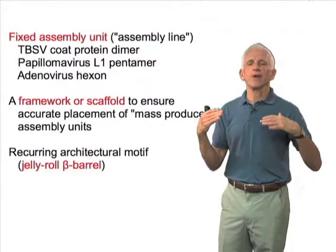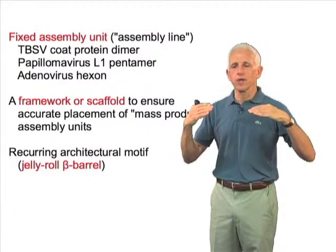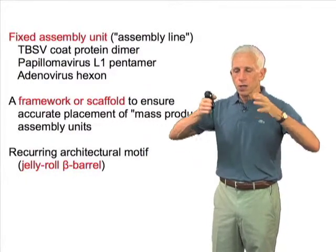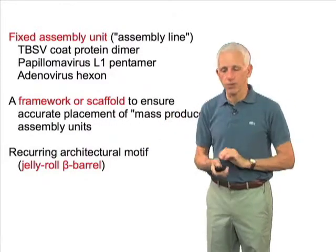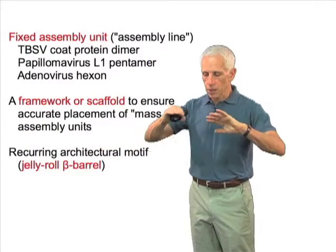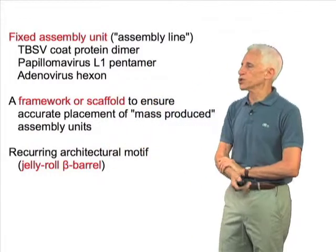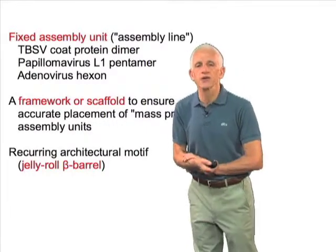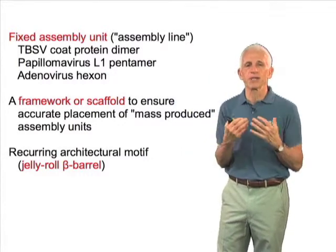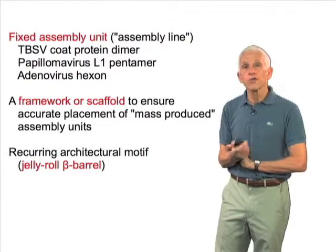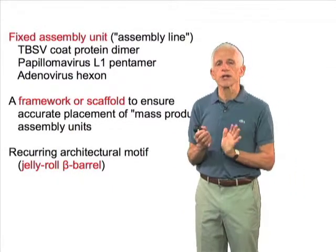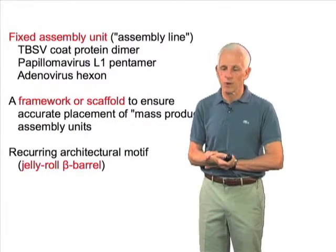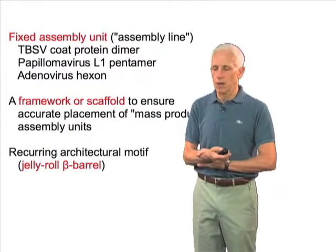But in order to determine how that mass-produced assembly unit fits into a defined structure of larger size — how the positioning of that subunit doesn't simply lead to errors in building a larger or smaller particle — there's a framework or scaffold, just as in the construction of a building, that ensures accurate placement of these mass-produced assembly units. There's also a recurring architectural motif that has appeared in the evolution of these structures, and it's complicated enough that it probably evolved only once.